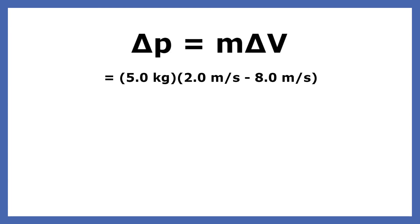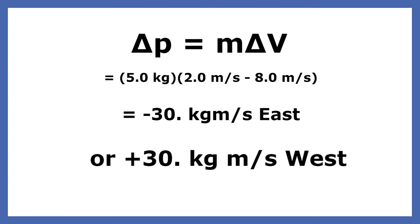When we multiply the mass five kilograms times the change in velocity, which is negative six, we get a change in momentum of negative 30 kilogram meters per second east or positive 30 kilogram meters per second west. If we get a negative answer, we can drop the negative and reverse the direction.